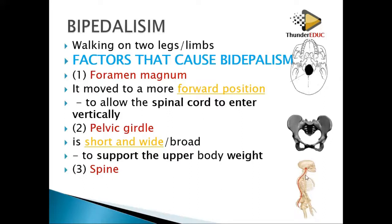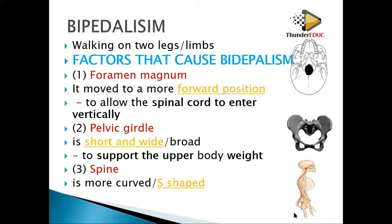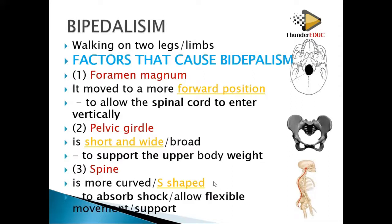The spine is more curved. If it is more curved, it means it can allow compression. When you jump from a high point to a low point, you don't just jump and stand straight — you crouch to allow compression. The spine is shaped this way to absorb pressure from above so that you can stand upright. It absorbs shock, allows flexibility during movement, and provides support.